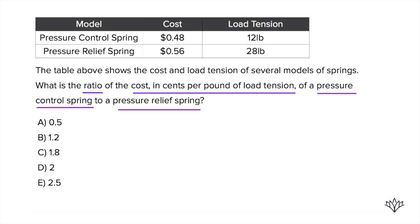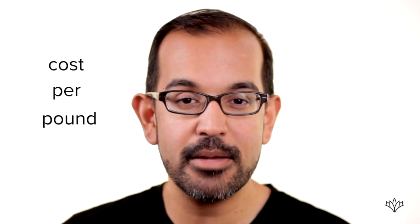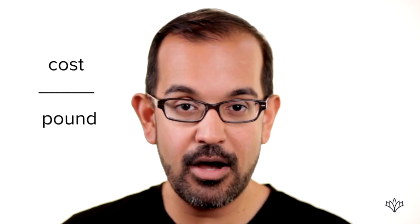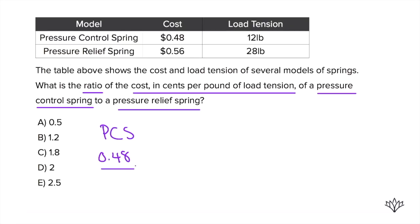The cost for the pressure control spring is 48 cents. What's the cost per pound? Cost per pound means cost over pounds. So here that would be 48 cents over 12, which gives us four cents. So the cost per pound for the pressure control spring is four cents.